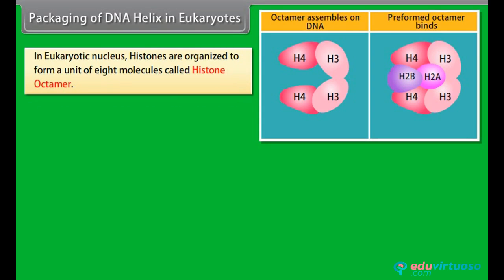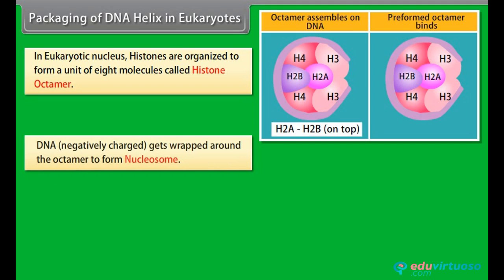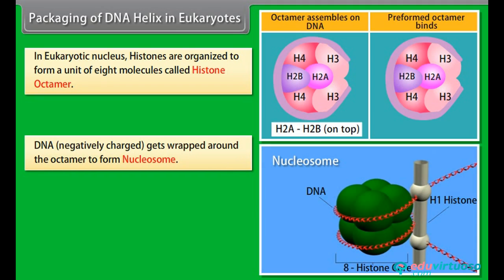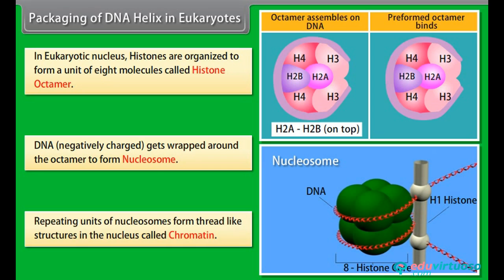In the eukaryotic nucleus, histones are organized to form a unit of 8 molecules called a histone octamer. DNA, which is negatively charged, gets wrapped around the octamer to form a nucleosome. Repeating units of nucleosomes form thread-like structures in the nucleus called chromatin.